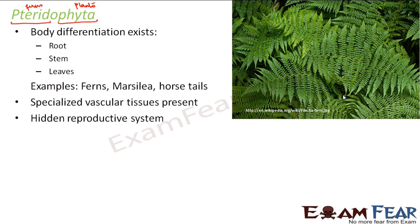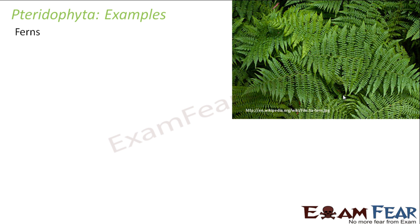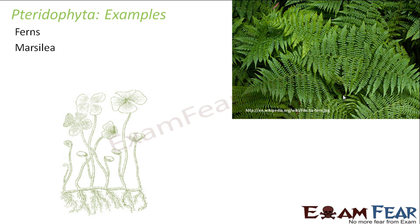The reproductive system in pteridophyta is also hidden — the specific reproductive organs are not visible, so they also fall under the category of cryptogams. They reproduce by spores, which are naked embryos, and they can reproduce sexually as well as asexually. Examples of pteridophyta include ferns.